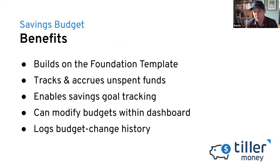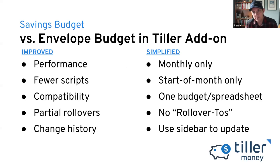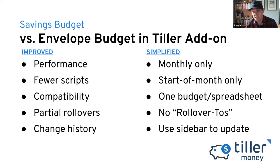The benefits of this budget are that it builds on top of the foundation template. It tracks and accrues unspent funds within a category — if you underspend in one month, that money will be available in the following month. It allows you to set and track savings goals, modify budgets directly in the dashboard like an envelope budget, and we create a budget history you can review. If you're using the envelope budget supported with the Tiller add-on, things that are better here include improved performance — it uses way fewer scripts, most work done in cell formulas — it's more compatible with the foundation template and Tiller Money Labs, you can enable rollovers selectively rather than for all categories, and we create a change history.